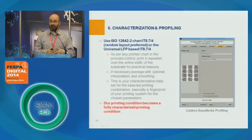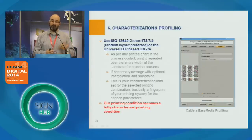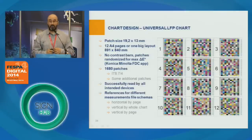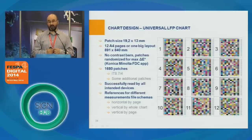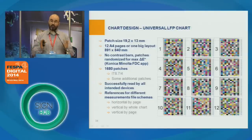Now that we've set up the total ink limits, the ink limits per channel, and built the gradation, it's time to transform our printing condition into a fully characterized printing condition. For that we print the profiling chart — usually either an ITA 7.4 chart or the new universal LFP chart. This chart was developed inside the digital printing working group technical committee hosted by FOGRA. One of its most important characteristics is that it allows different measuring devices to read it — your i1 Pro, iO, Konica Minolta D7, or Barbieri Spectral LFP. It is also a very good chart for backlit application profiling because it gives big size patches and the uniformity and smoothness of data needed for capturing your characterization dataset.